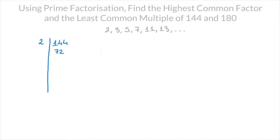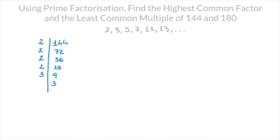2 is also a factor of 72, and 72 divided by 2 is 36. Again, 36 has a factor of 2, so I write that there — 36 divided by 2 is 18. 18 also has a factor of 2, so I write 2 in the left-hand column; 18 divided by 2 is 9. And 9 has a factor of 3, so I write 3 in the left-hand column, and 9 divided by 3 is 3. Finally, the only factor of 3 in this list is itself, which is 3, so I write 3 in the left-hand column, and 3 divided by 3 is 1. And I stop there for 144.